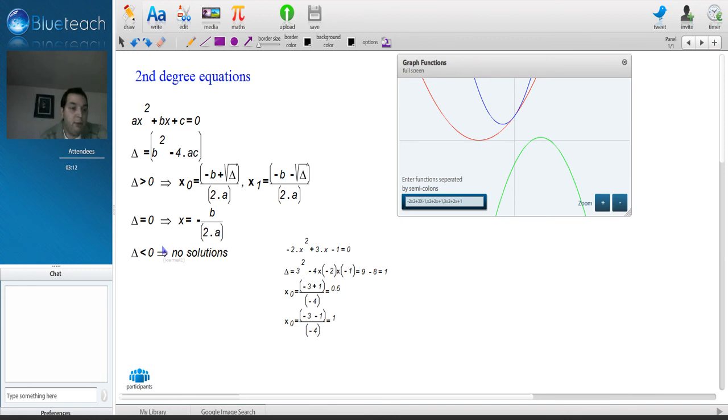And the third possibility is that delta is strictly negative. In which case, you can look very hard, but you will not find the solution. Because there is no such solution when delta is negative.